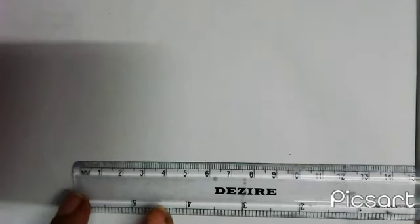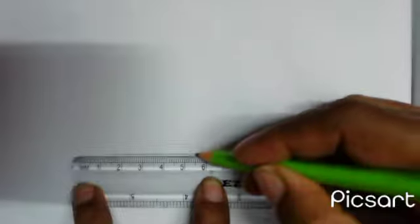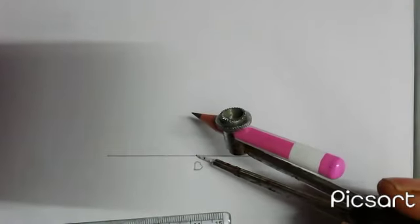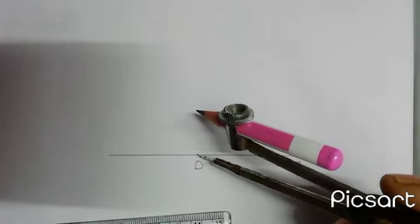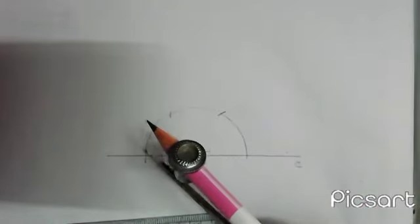I'm going to draw a 135-degree angle. Taking any measurement in my compass and taking BS as center, I draw an arc. This is 60 degrees, this is 120 degrees, and this is 180 degrees. If I bisect this area, then I will get 150 degrees.